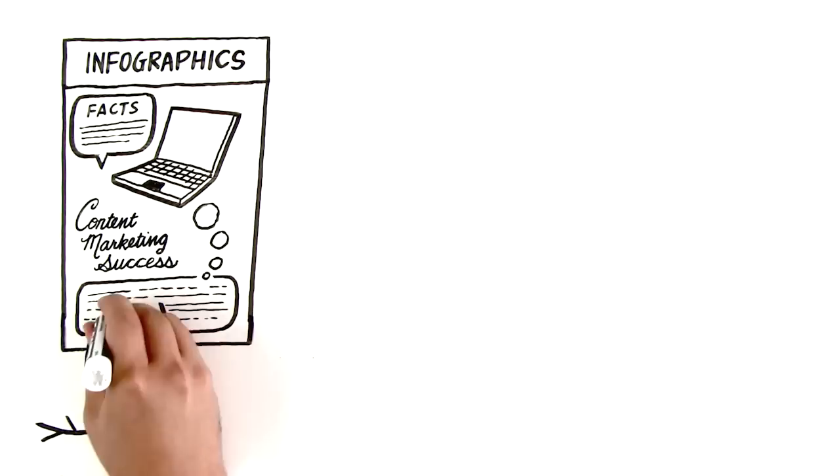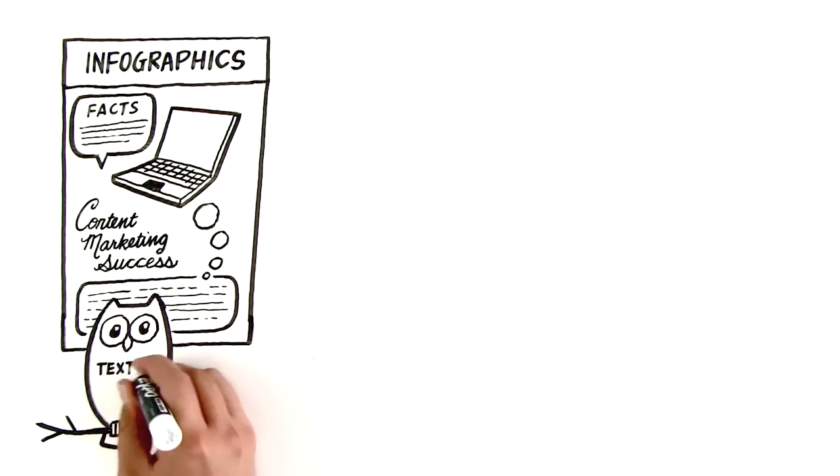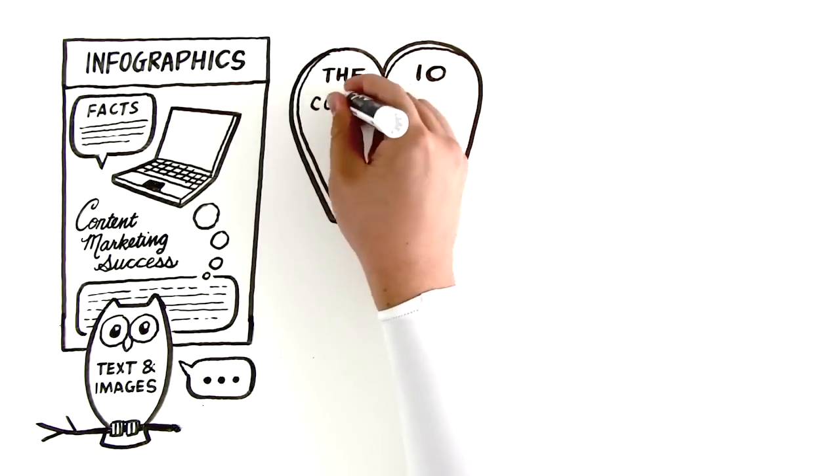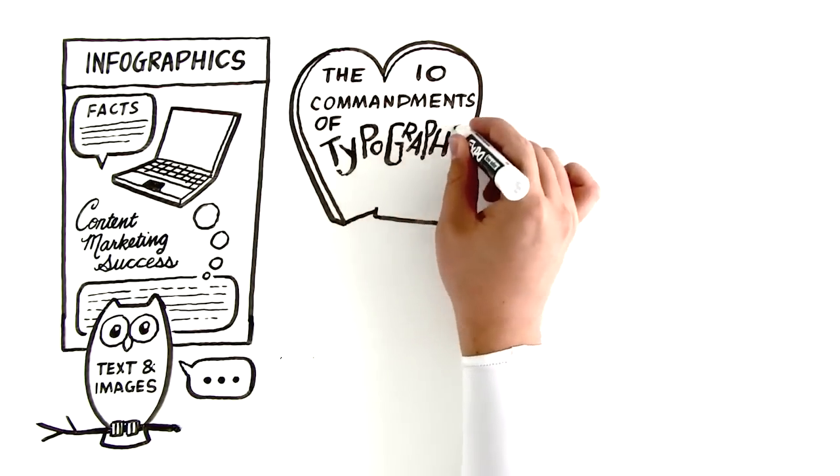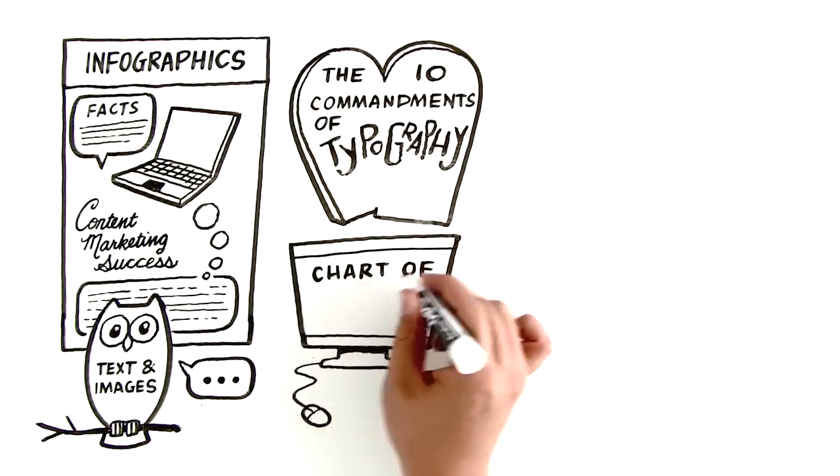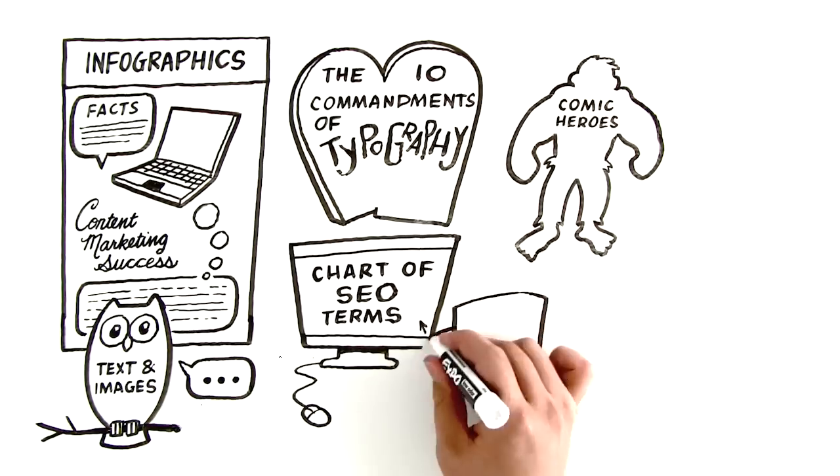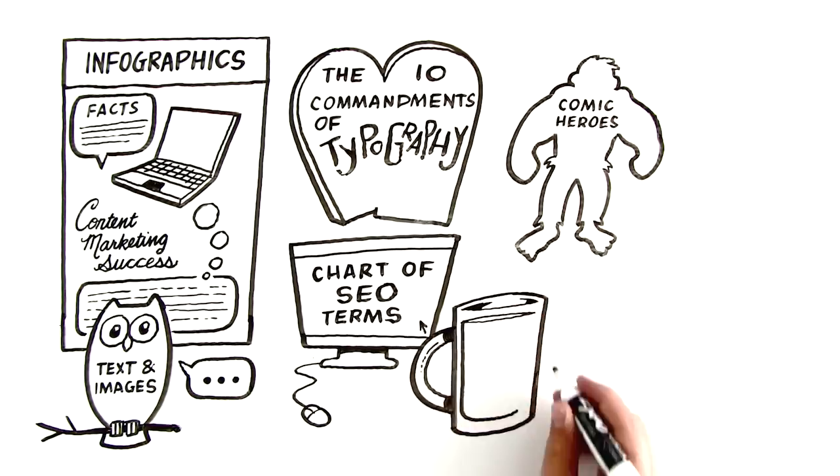Infographics combine text and images to communicate interesting facts on a specific topic. An infographic can be about the Ten Commandments of Typography, a periodic chart of SEO terms, Marvel comic book heroes, or a complicated diagram of different types of beer.